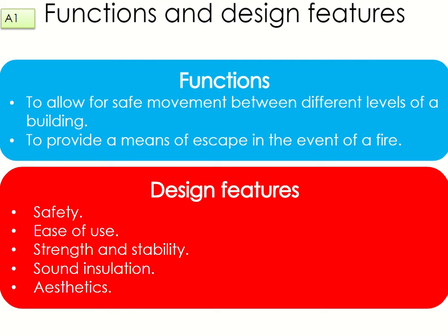So if you're upstairs and there's a fire, you can go downstairs to get out of the house, or if you can't get outside, certain houses you'll be able to get upstairs and jump out onto the roof through the Velux window or something like that. So they've got two functions and five design features. The first design feature, safety, ties in with the second function.